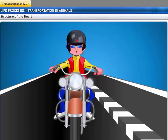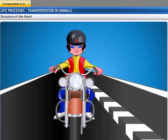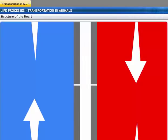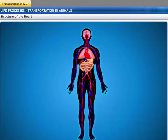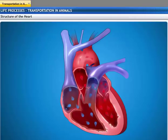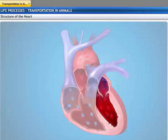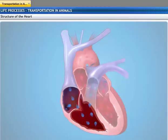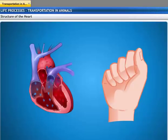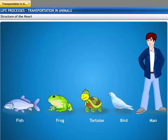These white lines on the road are called dividers. They are used to separate incoming traffic from outgoing traffic. Similarly, the heart has specific chambers that prevent oxygenated blood from mixing with deoxygenated blood. The heart is a muscular organ which is about the size of our fist, and the structure of the heart is not the same in all animals.